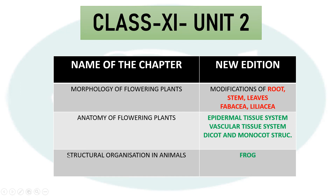One notable chapter is Structural Organization in Animals. Here, all topics remain the same except that Earthworm and Cockroach have been removed. As per the NMC Circular, Frog is the only animal topic remaining for your exam. Connective tissue and all other topics are the same. So there is only Frog for your exam in this chapter.